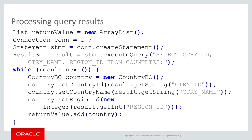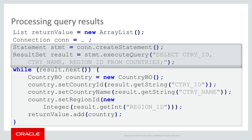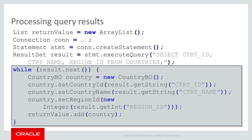Here is the actual code. First, we create the JDBC connection as we have seen before — I removed the details for the sake of brevity. After that, I use a simple statement to retrieve the data. As you can see, the query includes all three columns from the countries table. Then I iterate on the result set. For each row, I create a new CountryBO object instance and call the appropriate getters to populate it. Finally, I add the CountryBO object to the list.